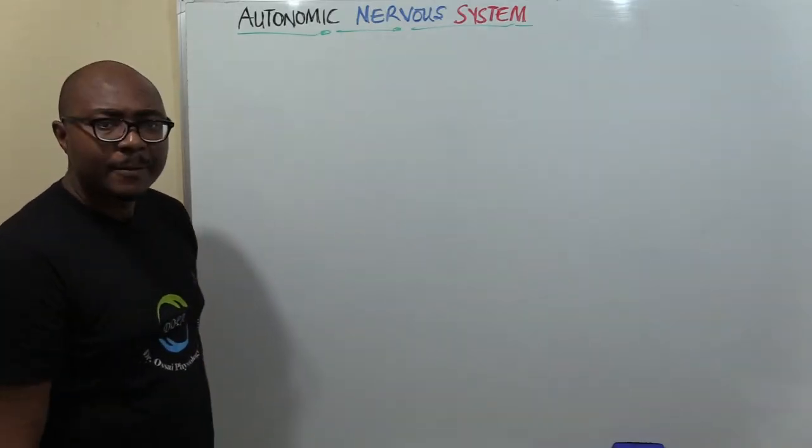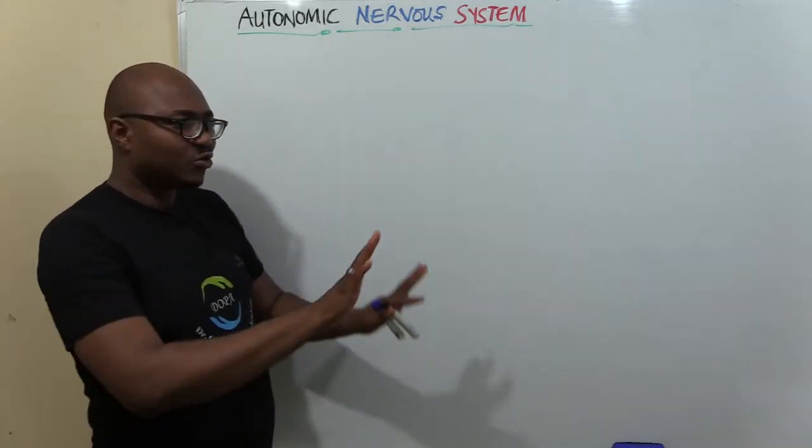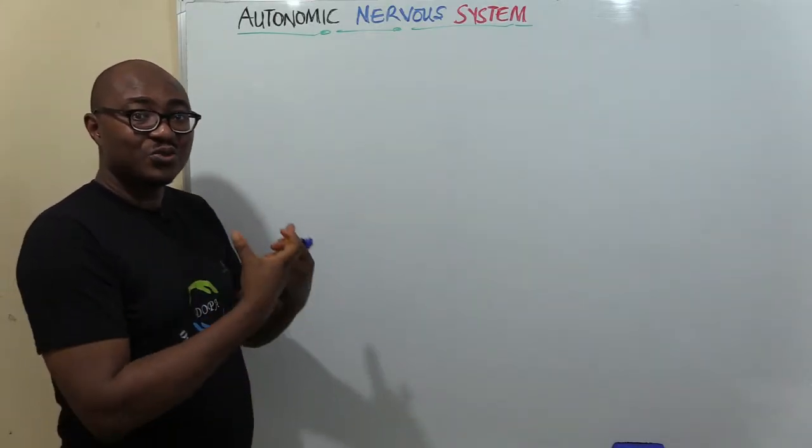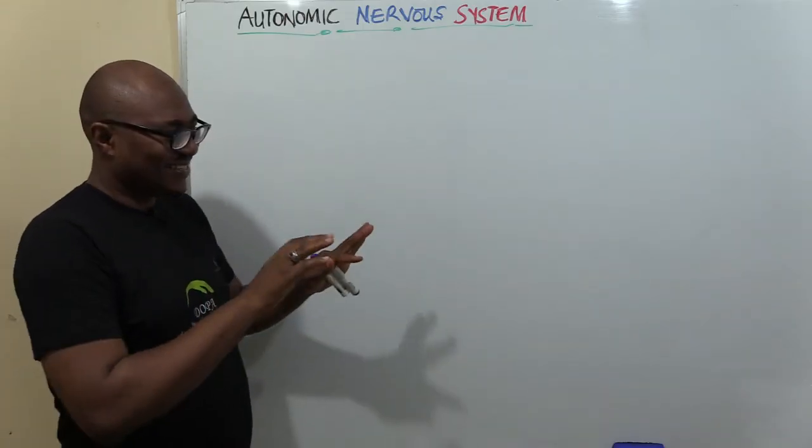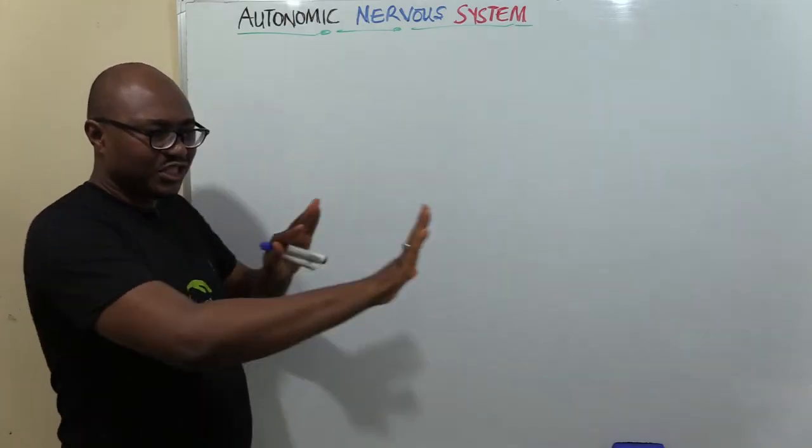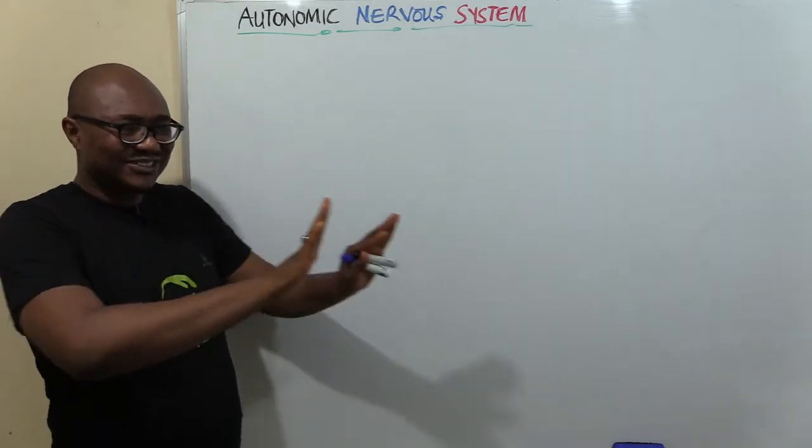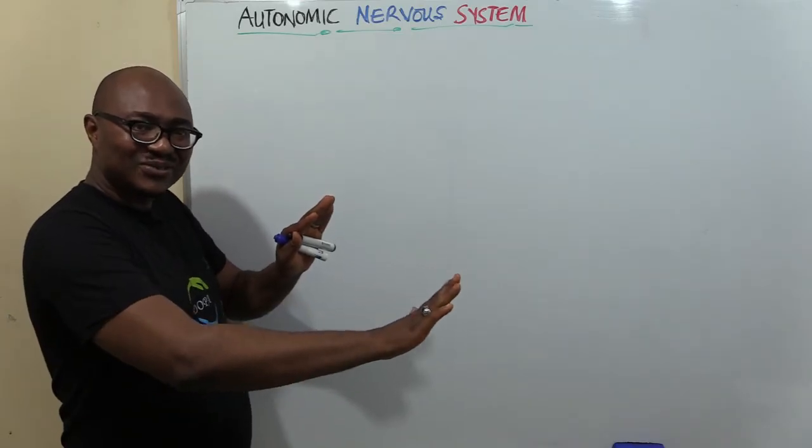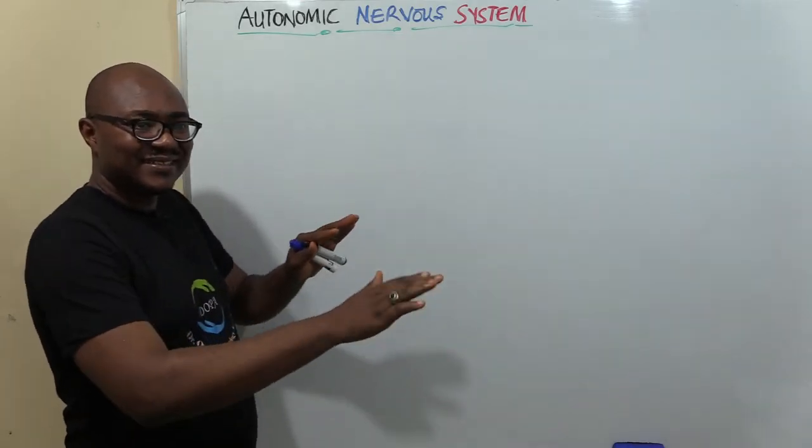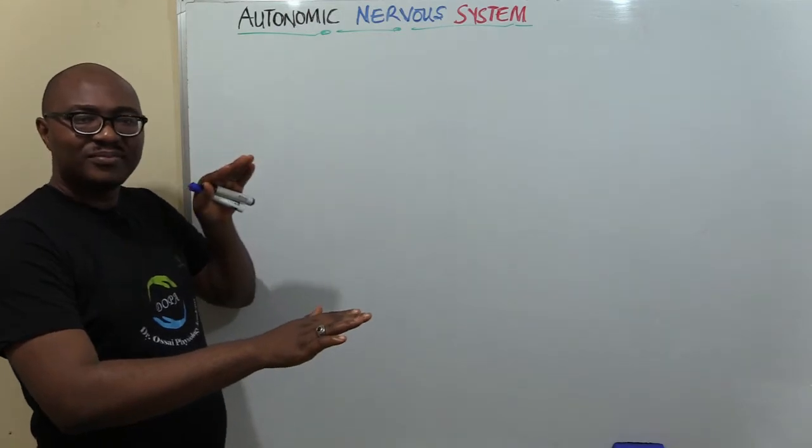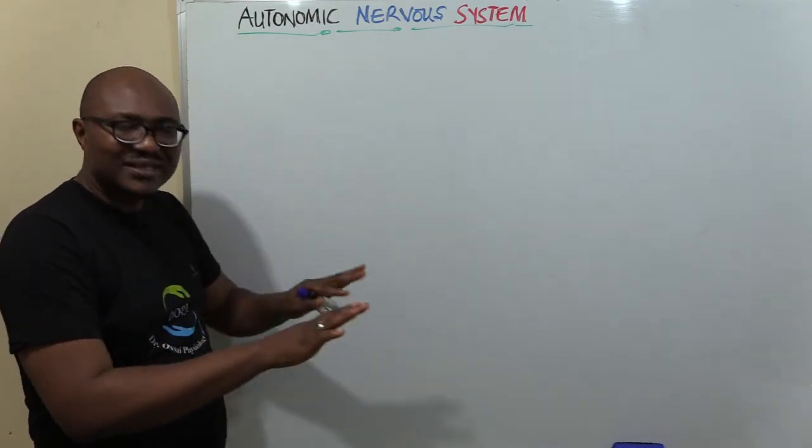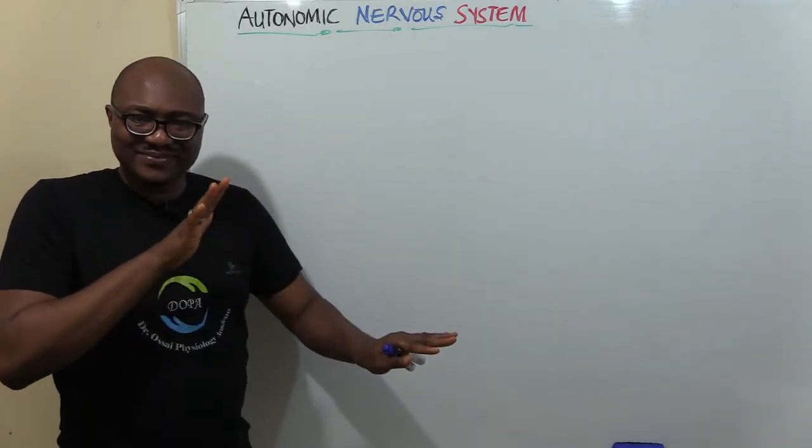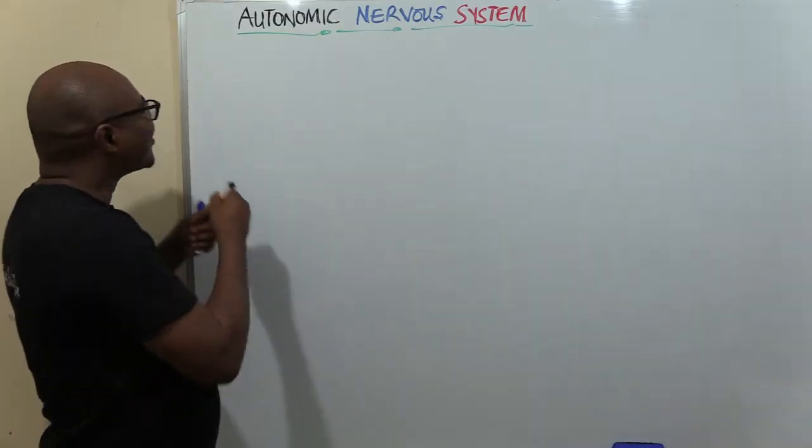This Autonomic Nervous System is divided into two. One of the underlying principles of physiology is that the body works through multiple control systems that function in opposition to each other. It's just like the brake and the throttle of a car. As you are pressing the throttle to accelerate, you're removing your leg from the brake.